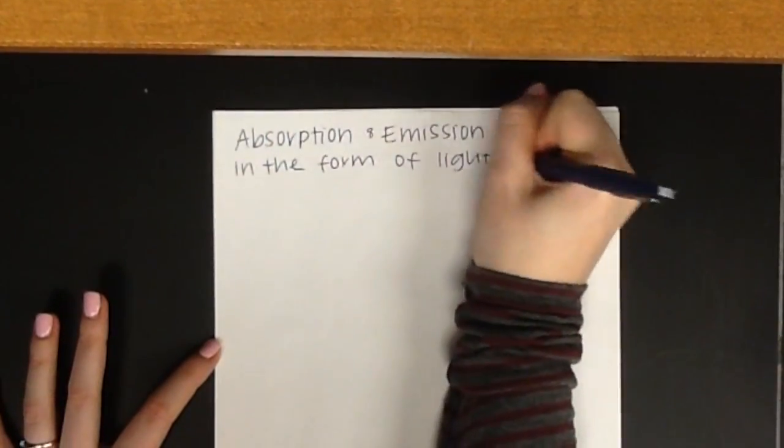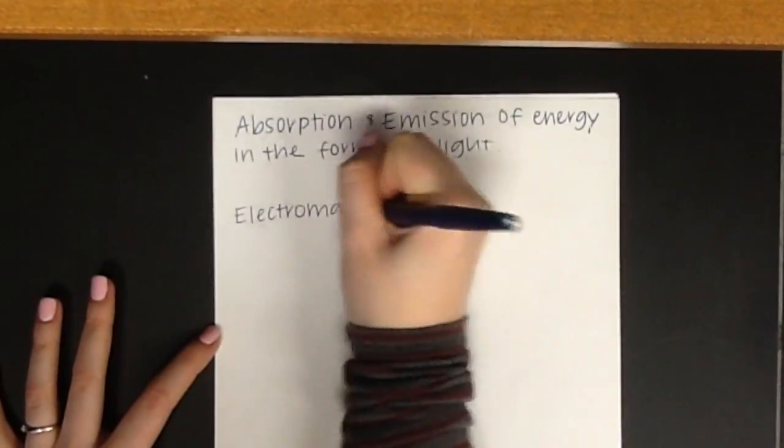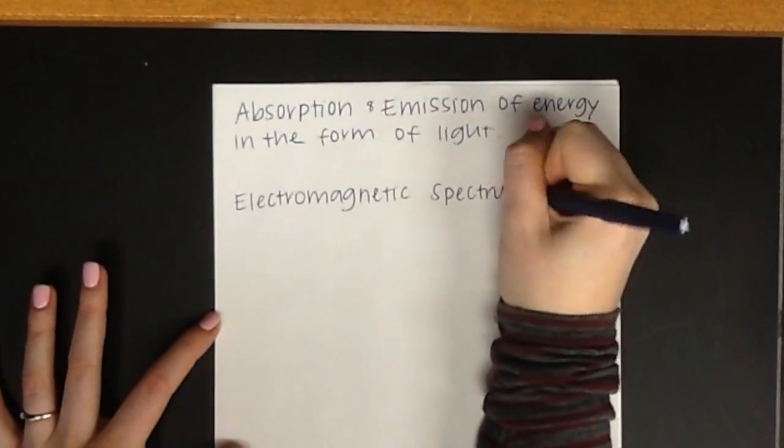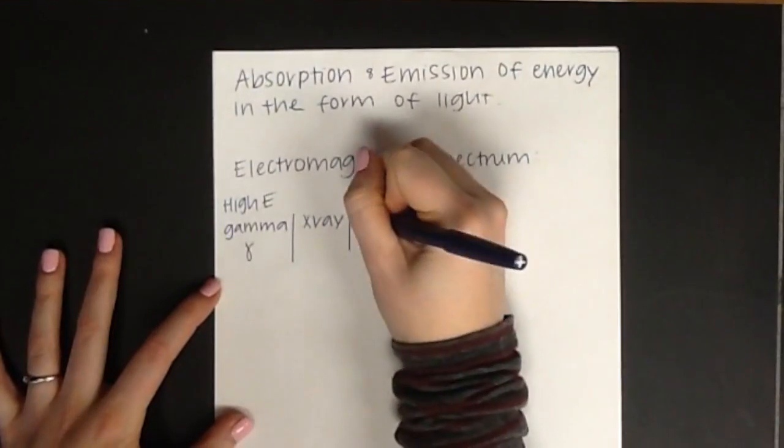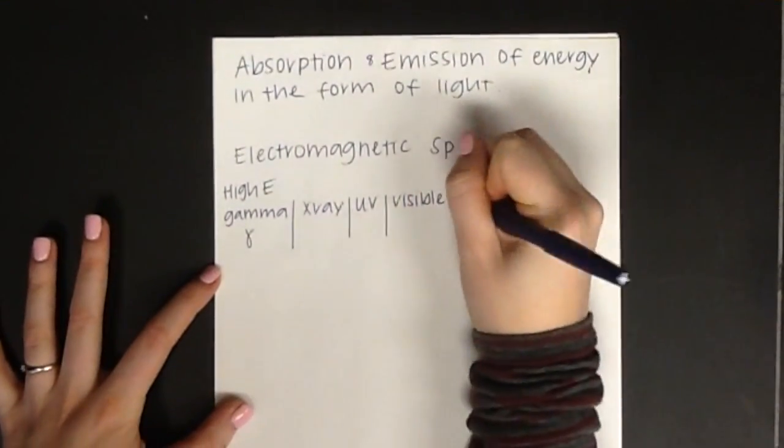To begin, you should be familiar with the electromagnetic spectrum. This spectrum shows the various kinds of radiant energy in order of decreasing energy, with gamma being the highest energy and radio being the lowest energy.